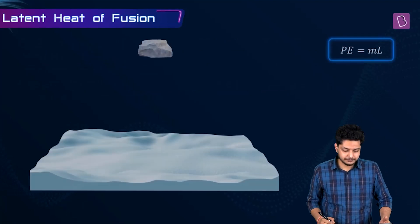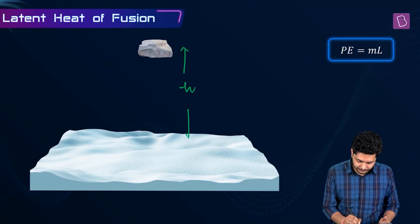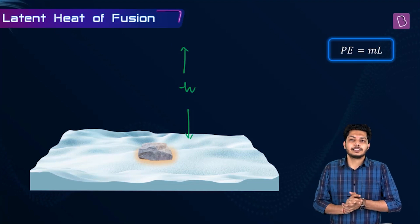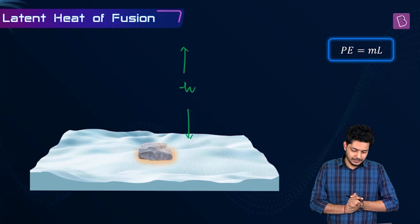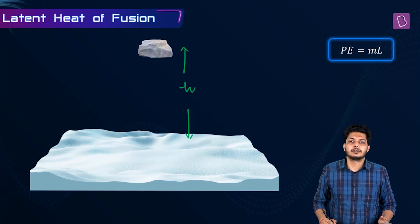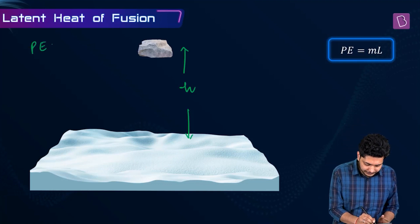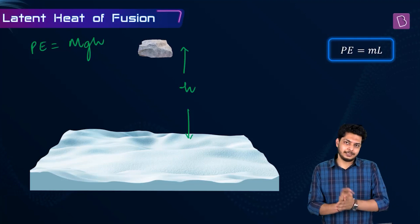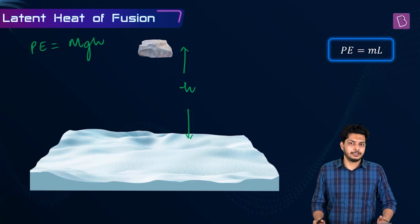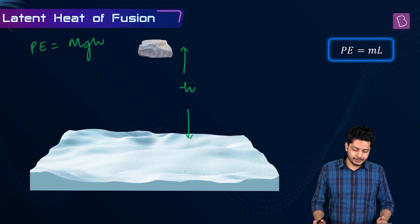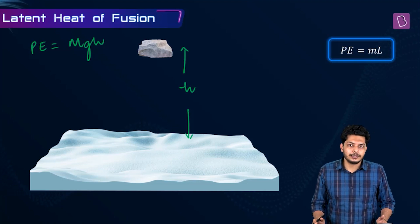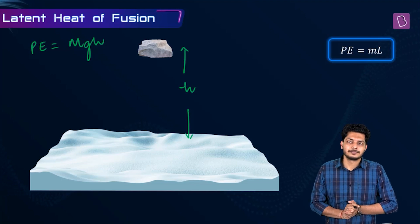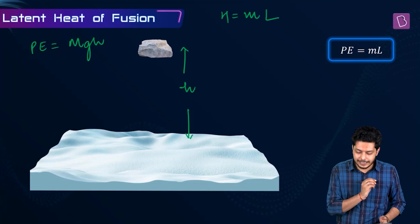Let's picturize it: a stone at height H falls on snow and transfers energy, melting ice and converting it to liquid. At the top, the stone has potential energy MGH, which is converted to heat energy used in melting ice. The heat required to convert ice to water is H equals mass times latent heat of fusion.